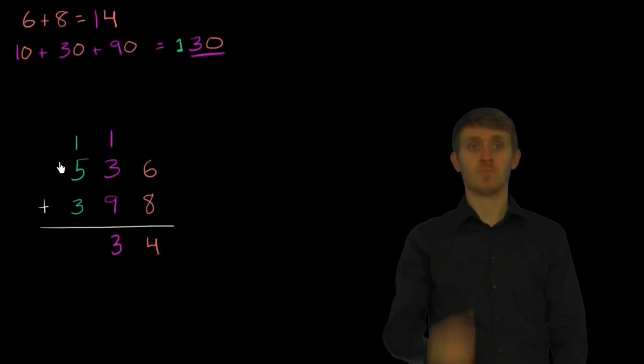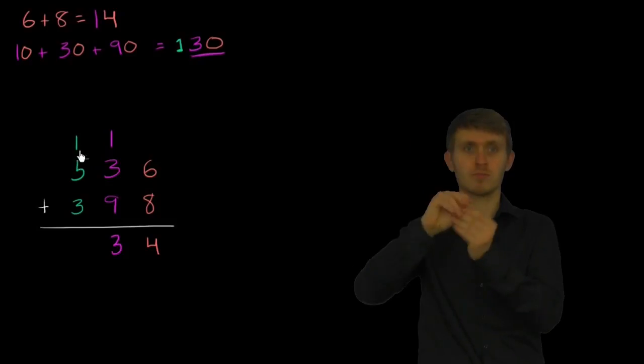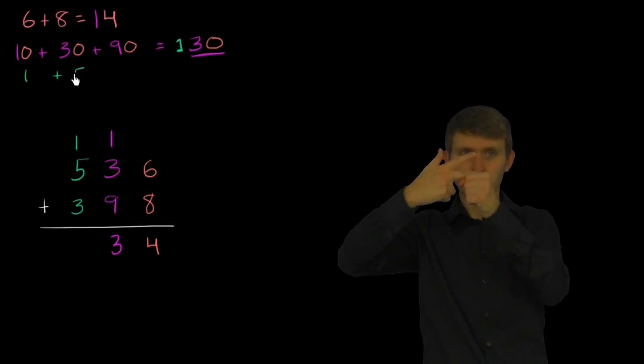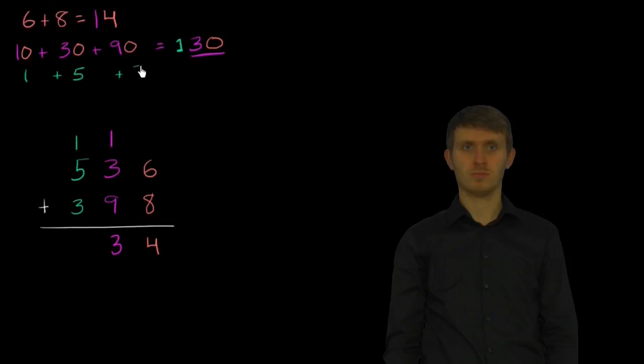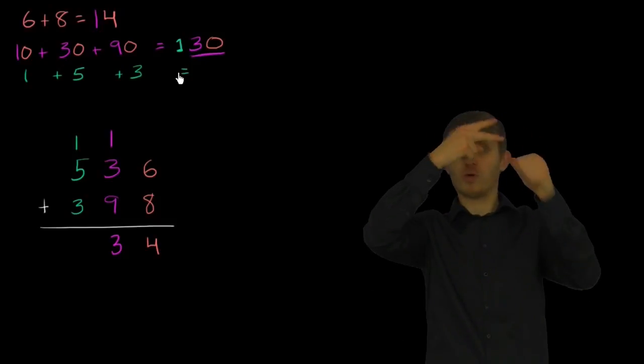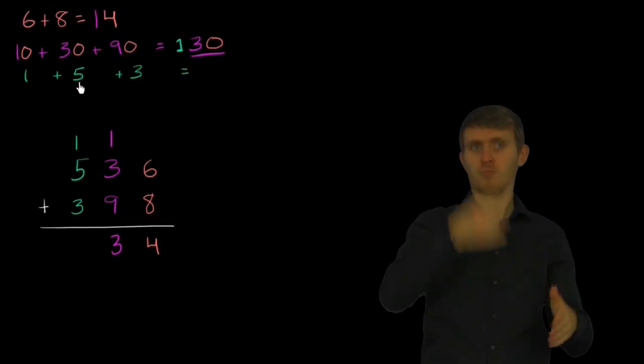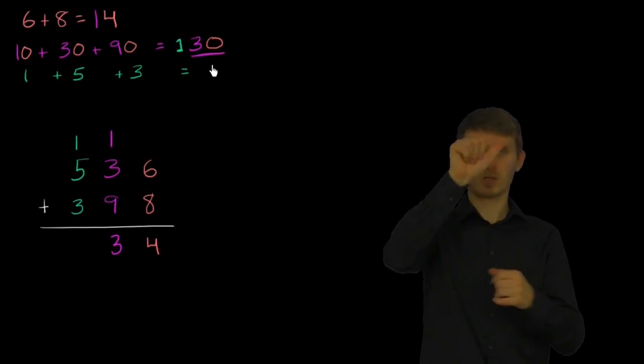And now we're adding up the hundreds place. 1 plus 5, 1 plus 5 plus 3 is equal to, let's see, 1 plus 5 is equal to 6, plus 3 is equal to 9.